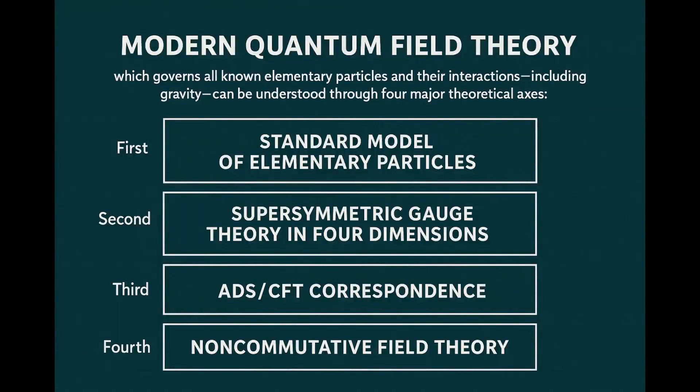Thus, modern quantum field theory, which governs all known elementary particles and their interactions including gravity, can be understood through four major theoretical axes. First, the standard model of elementary particles. Second, supersymmetric gauge theory in four dimensions. Third, the ADS-CFT correspondence. Fourth, non-commutative field theory, or NCFT.